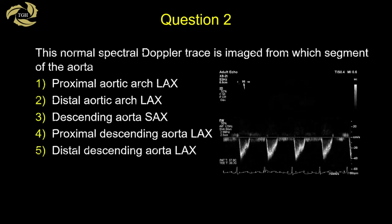Question two: this normal spectral Doppler trace was imaged from which segment of the aorta? A pulsed-wave sample volume was positioned in a particular part of the aorta, giving a very normal trace. This requires some cerebral effort to tease out, but you should be able to arrive at an answer.